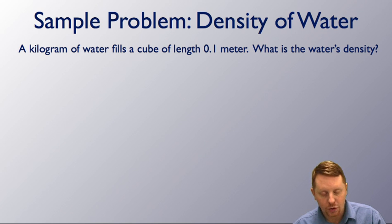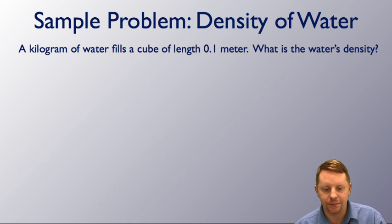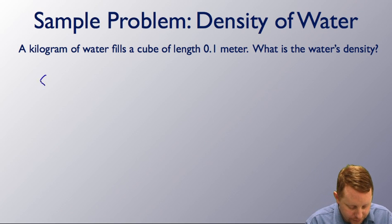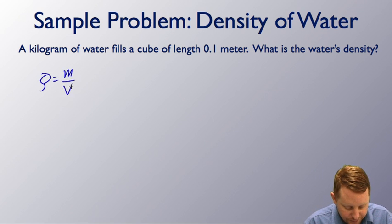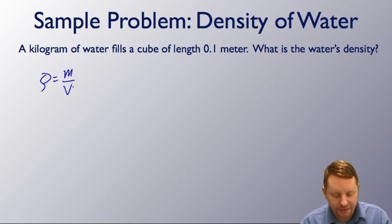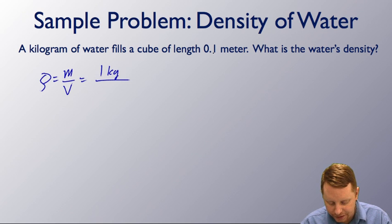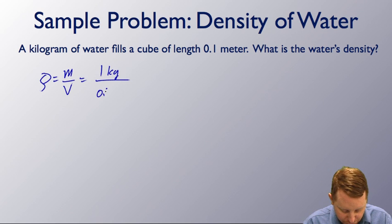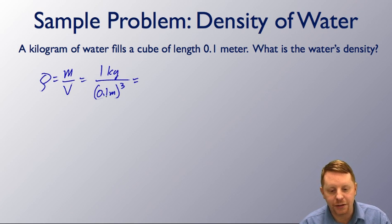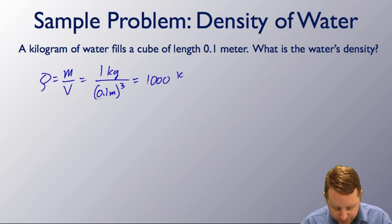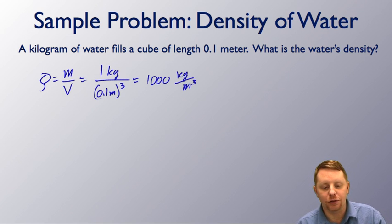Let's find the density of water. One kilogram of water fills a cube of length 0.1 meter. What is the water's density? Rho equals mass divided by volume. Our mass is one kilogram, and our volume — a cube of length 0.1 meter — is 0.1 cubed, or one one-thousandth, giving us 1,000 kilograms per meter cubed. That's the density of fresh water.